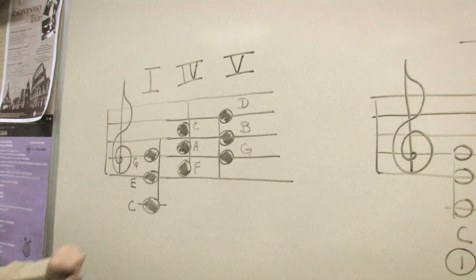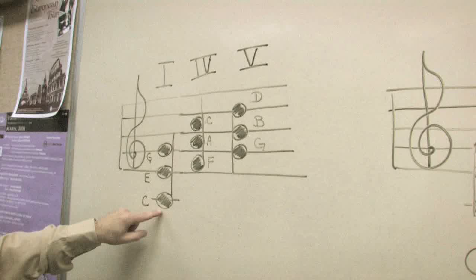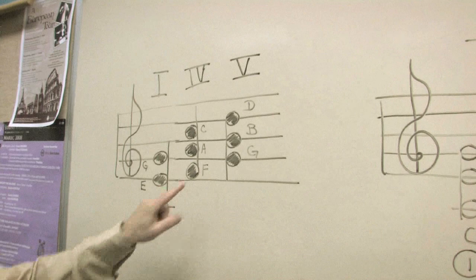The first chord, of course, will be the one chord in the key of C, which will be C, E, G. The four chord in the key of C will be F, and you would spell the F chord F, A, C.